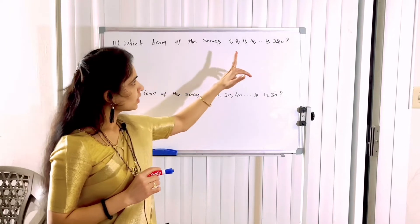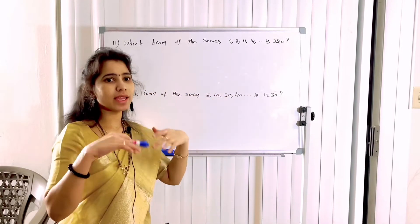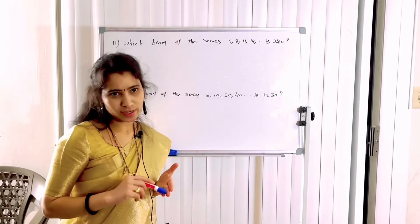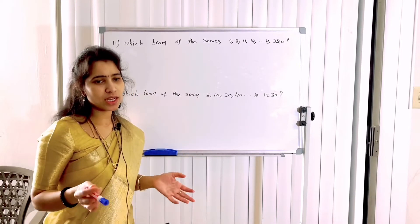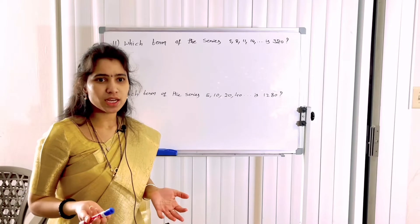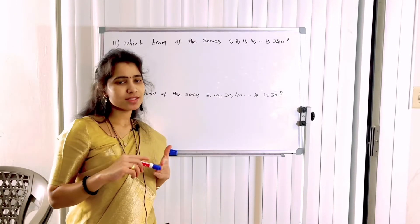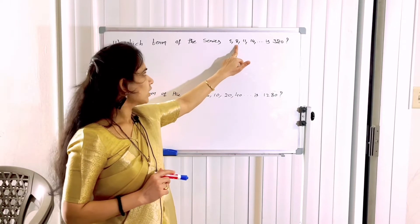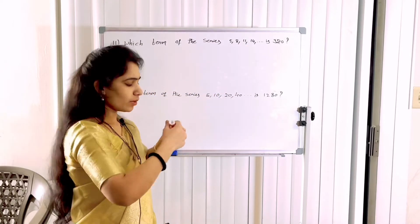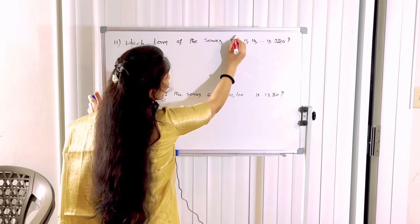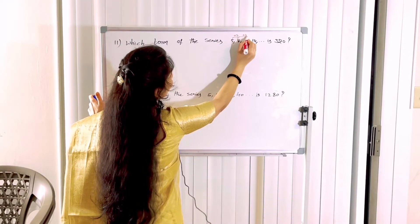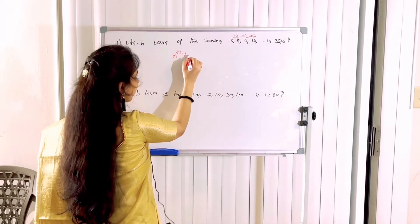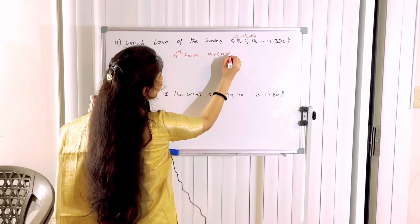Which term of the series is 320? We need to find which term in the given series equals 320. First, identify the series type. The difference between 5 and 8 is 3. The difference between 8 and 11 is 3. The difference is the same, so this is an Arithmetic Progression series. Use the formula: nth term = A + (N-1) × D.